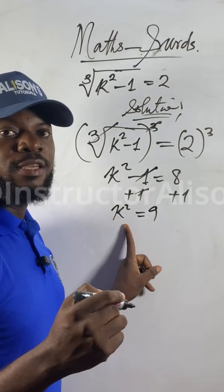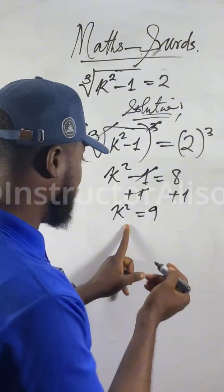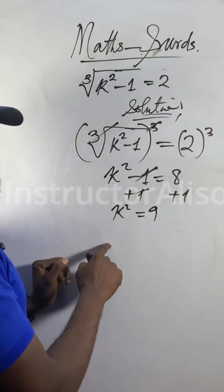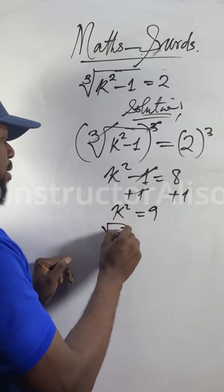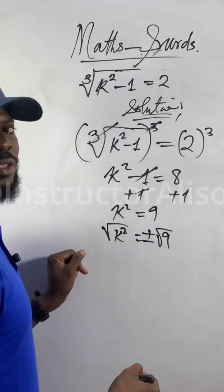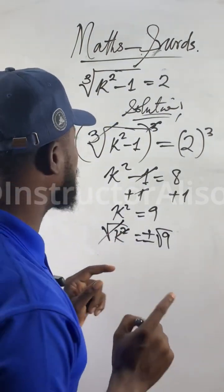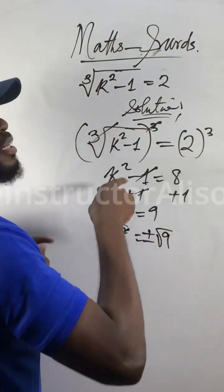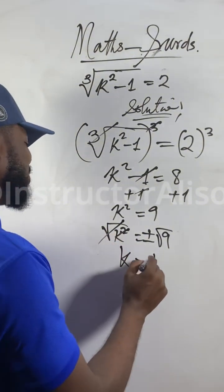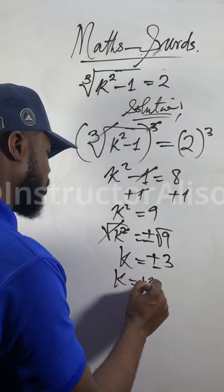k squared equals eight plus one, which gives nine. So the value of k: k squared equals nine. Because of the square, I introduce the square root to isolate k. You go with plus or minus. This cancels, so k equals plus or minus the square root of nine, which is plus or minus three.